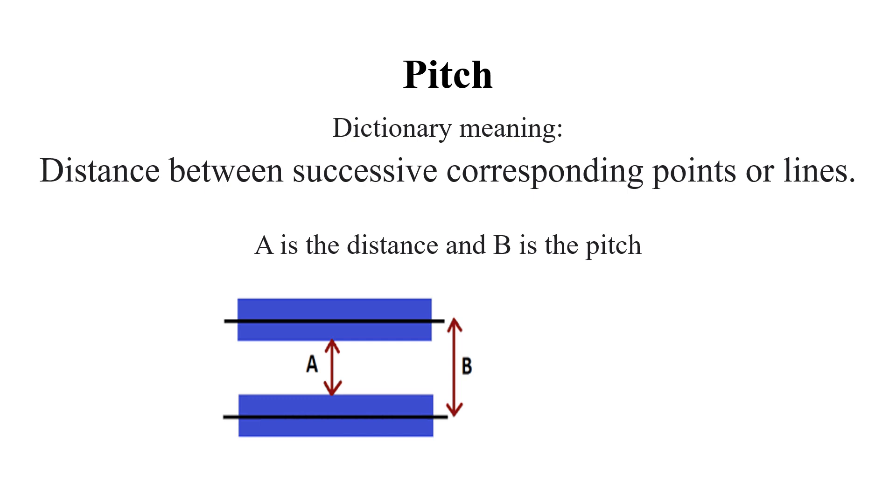Pitch is a very common English word whose meaning is distance between successive corresponding points or lines. If you refer to the diagram, A is the distance between the two structures, whereas B is the distance measured from center to center. In this case, we call B the pitch.